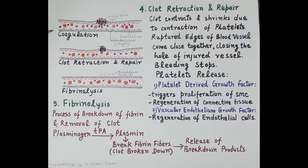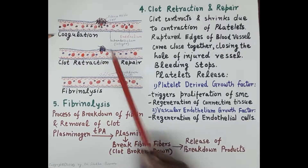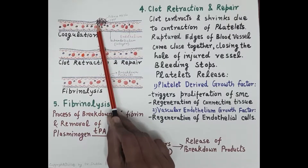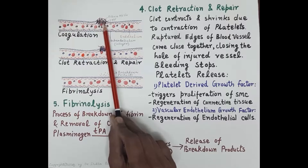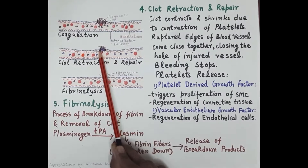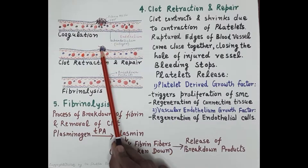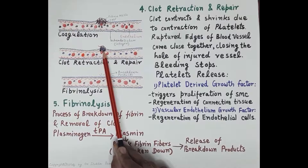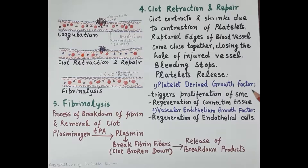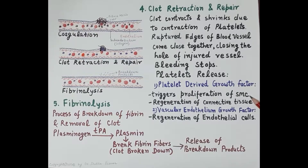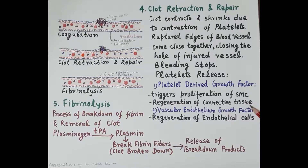Now let's discuss the fourth step: clot retraction and repair. After coagulation, during clot retraction the clot contracts and shrinks in size due to contraction of the platelets. When the clot shrinks, the ruptured edges of the blood vessel come close together and the hole in the injured blood vessel is closed. Retraction closes the hole and bleeding stops. Platelets release platelet-derived growth factor (PDGF), which is responsible for the proliferation of smooth muscle cells — healing of the tunica media — and also for regeneration of connective tissue, that is, regeneration of collagen.